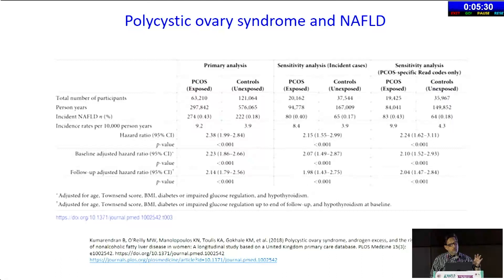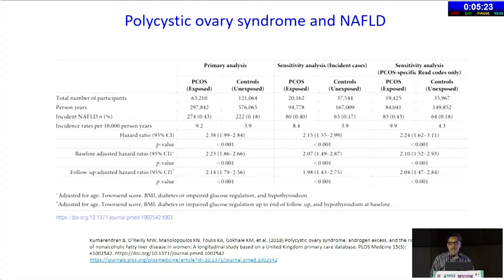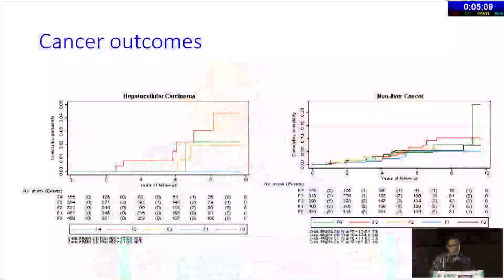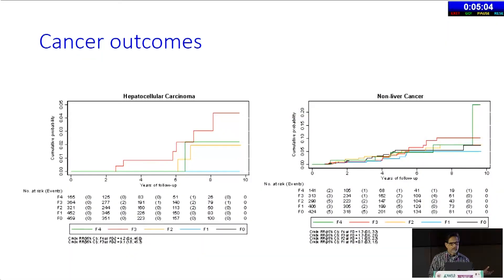Young women who have this suffer a lot because there is a strong correlation with polycystic ovary syndrome and infertility. Many of these women struggle with reproductive health. When you have advanced liver fibrosis, that is the population where you get liver cancer, but the stage of disease does not impact extrahepatic cancers — this has been shown by a couple of other groups as well.